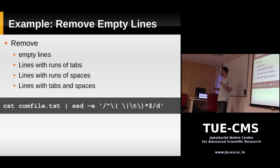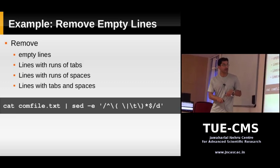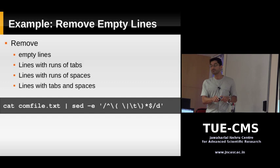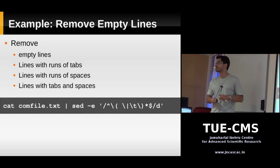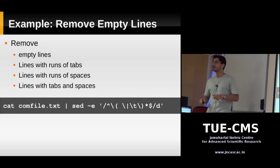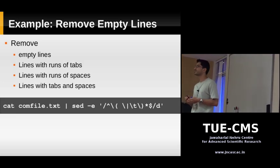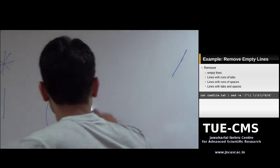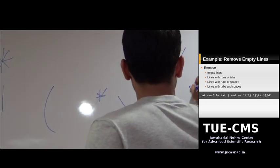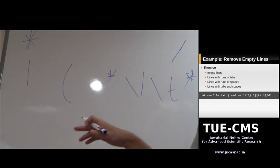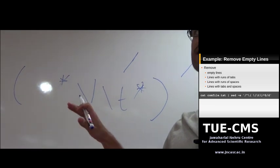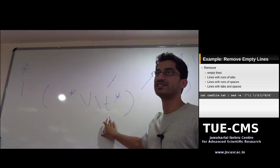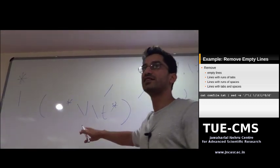We're using the parentheses not because we want to capture things, but because we want to group them. Why are we grouping this inside the parentheses? So the star applies to the whole group. If you did not put the parentheses, the star would be applicable only to the tab character. But we want the star to be applicable to a space or a tab — zero or more occurrences of space or tab.